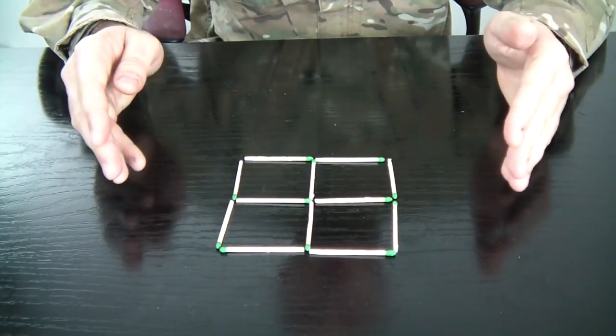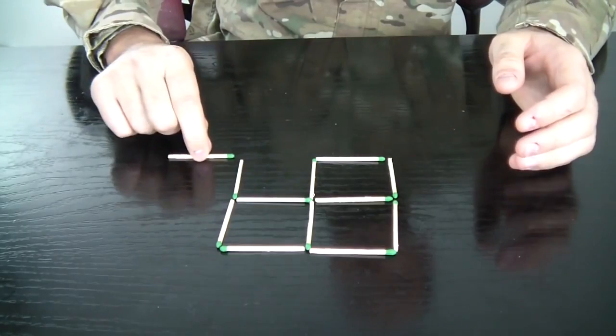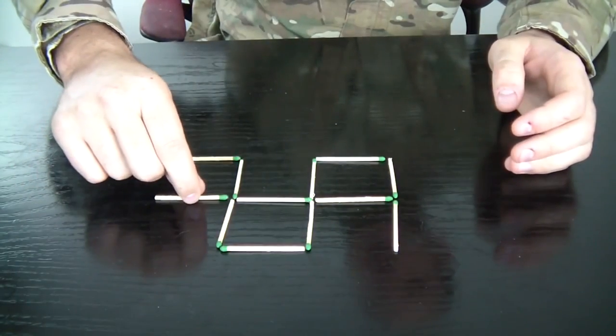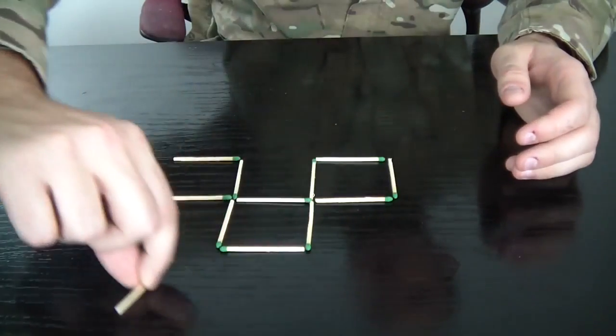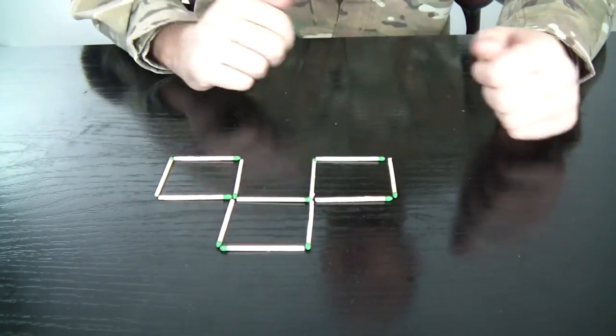This is pretty hard but if you know how to do it, it's actually pretty simple. All you gotta do is move this match right here, second match right here and the third match right here. And as you can see you got one, two, three small squares.